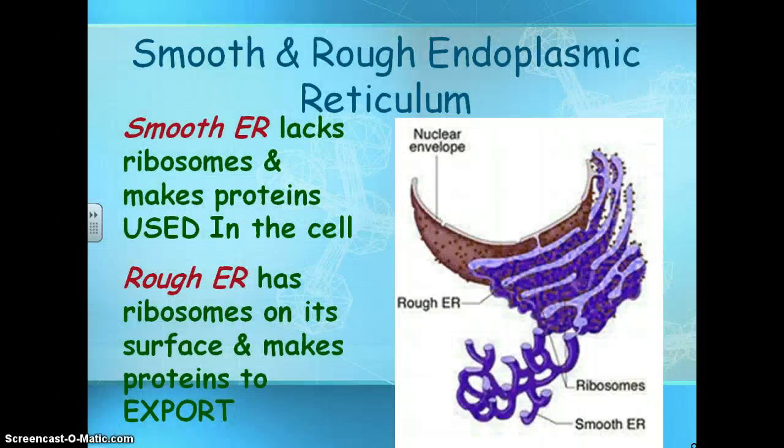Smooth and rough endoplasmic reticulum — basically what you need to know is that the endoplasmic reticulum makes and transports proteins.